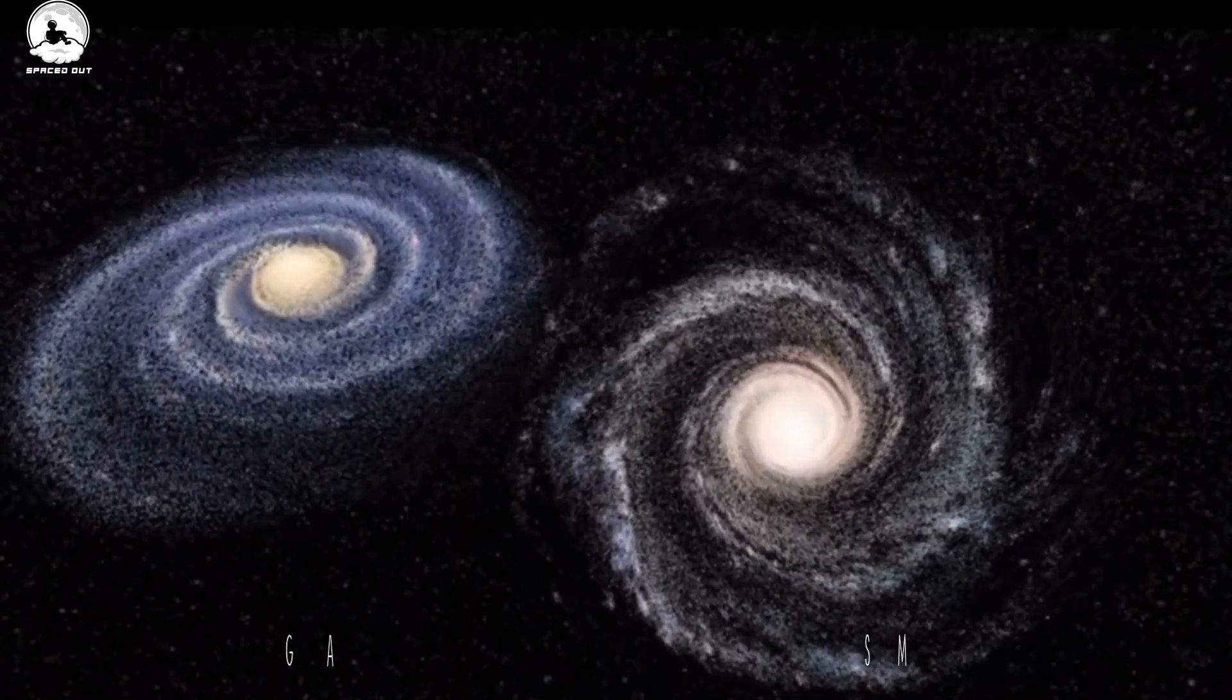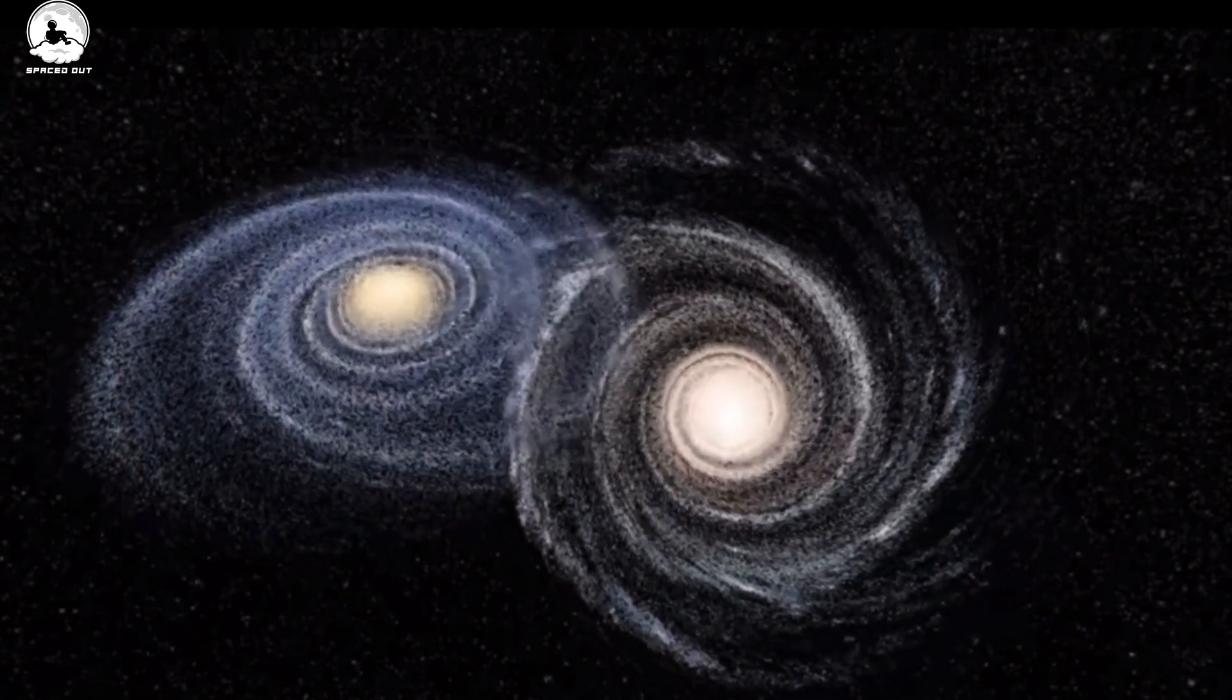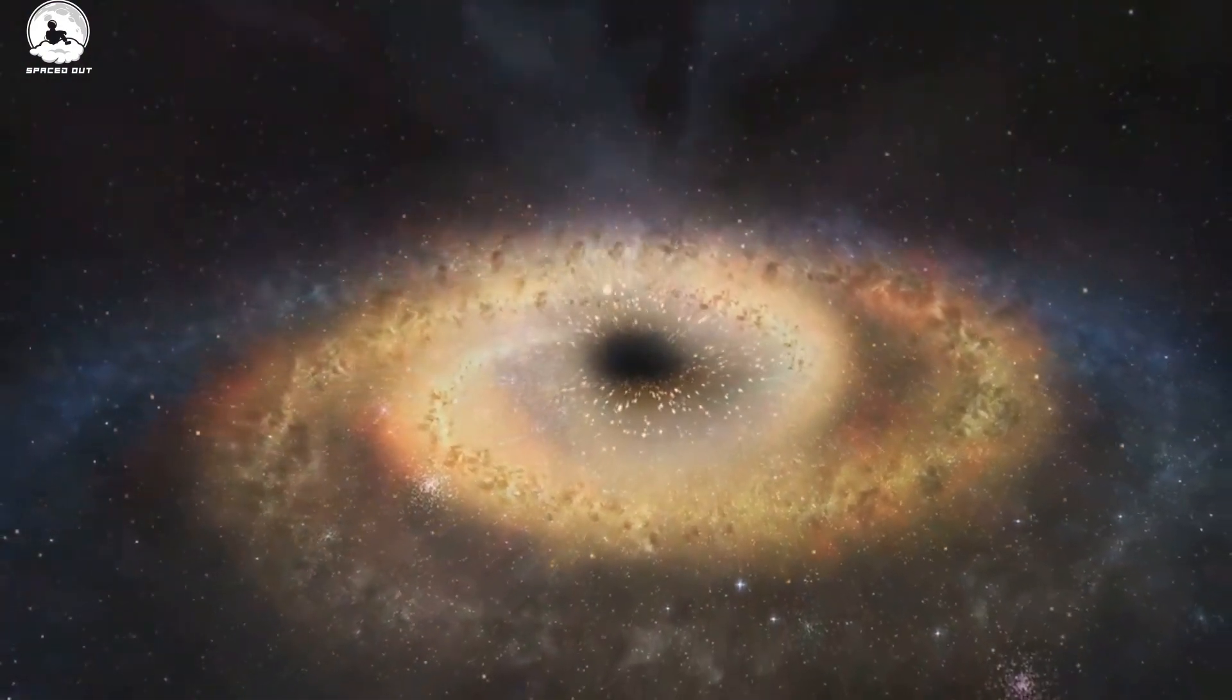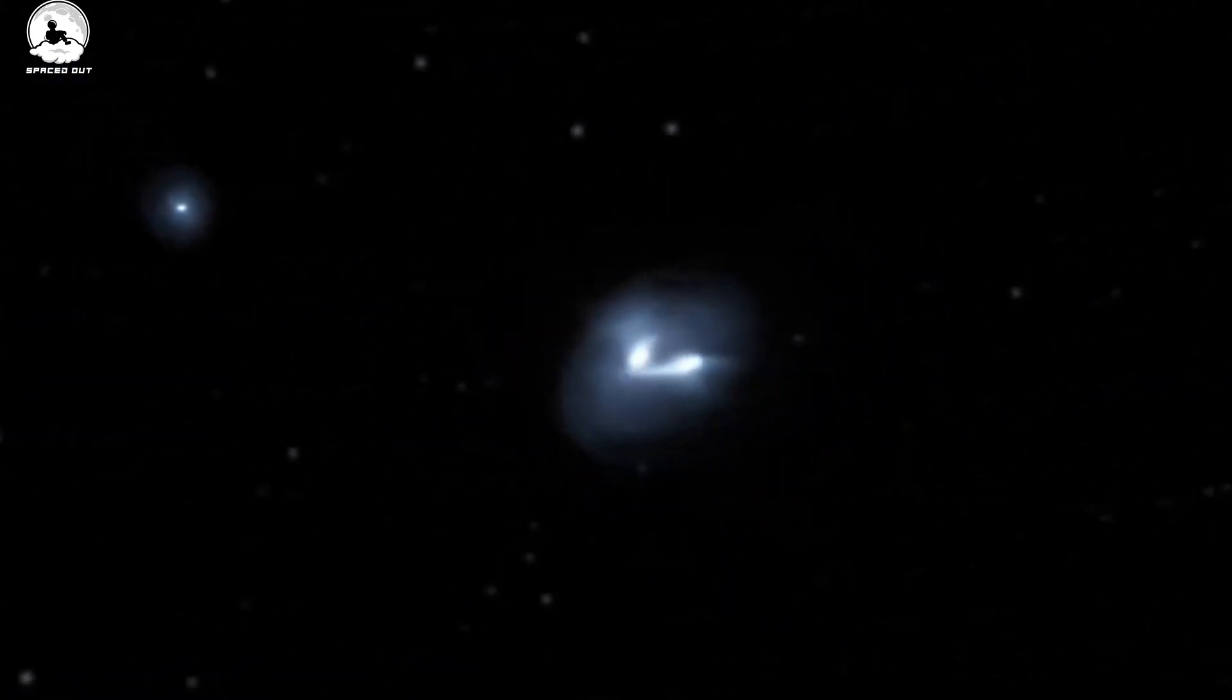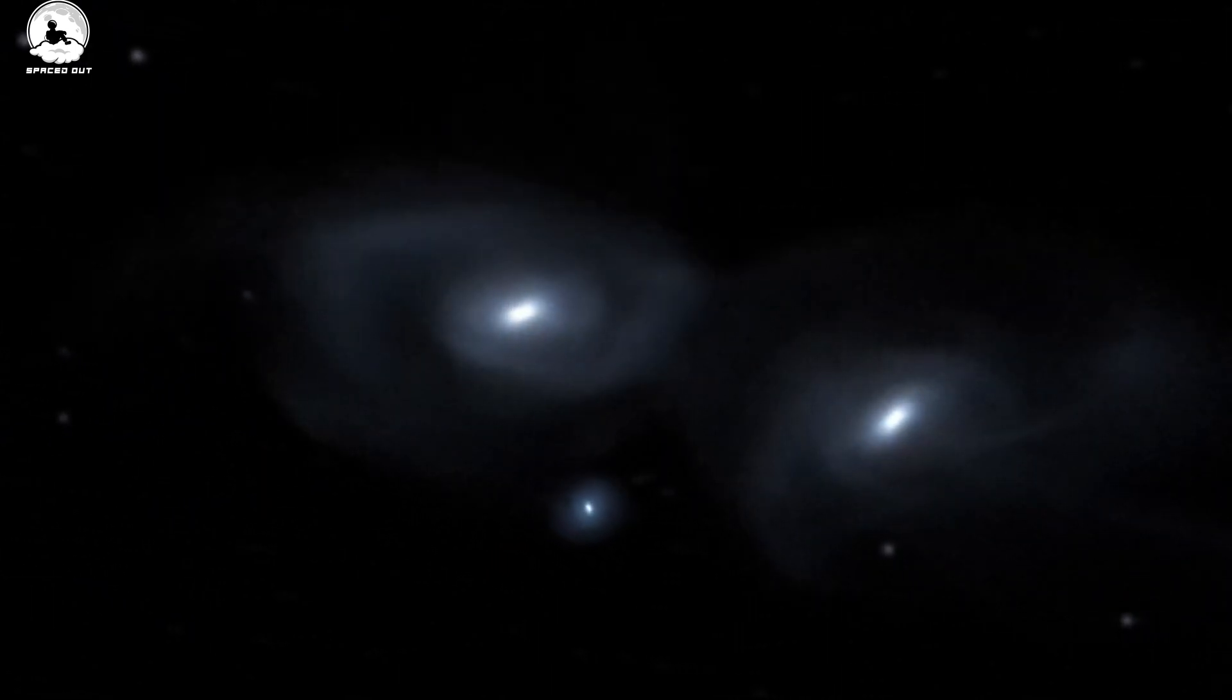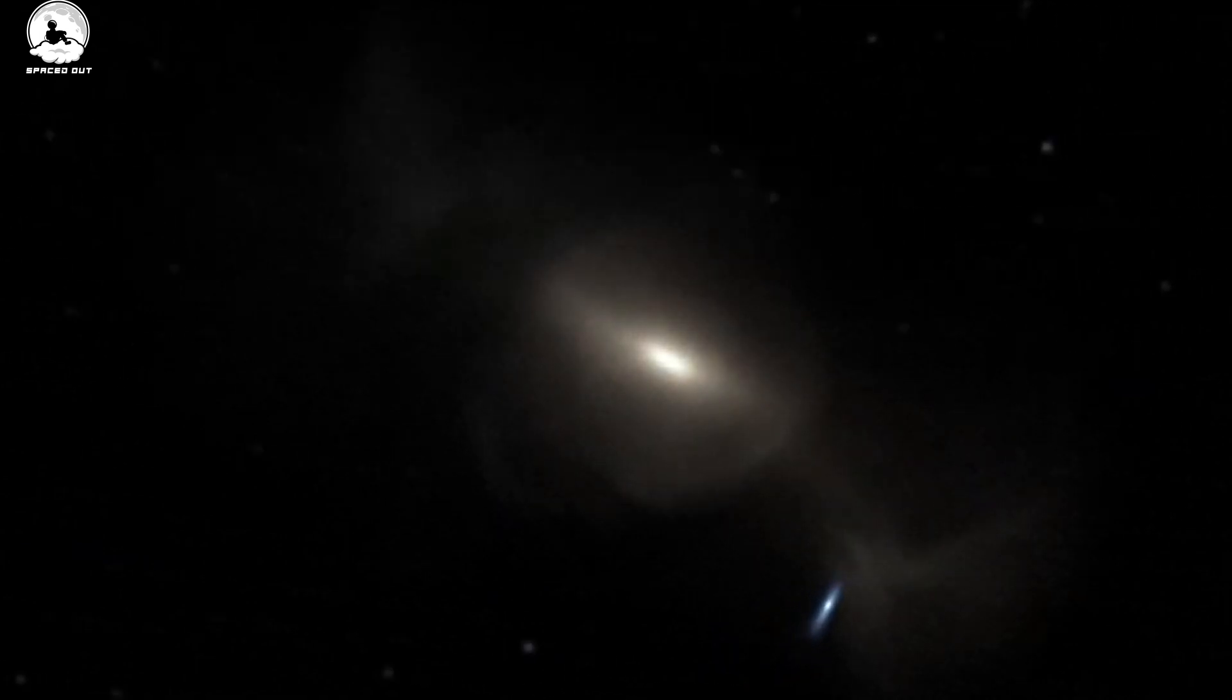Galactic cannibalism might sound like a term from a sci-fi movie, but it's a real and crucial process in our universe. Simply put, it's when a big galaxy pulls in and absorbs a smaller one. This isn't just about galaxies getting bigger, it's how they evolve and change over time. Think of a small galaxy getting too close to a big one. The larger galaxy's gravity starts pulling at the smaller one. Over time, the smaller galaxy gets torn apart, and its stars, dust, and gas become part of the bigger galaxy. It's a way galaxies grow, not just by making new stars, but by taking in stars from other galaxies.